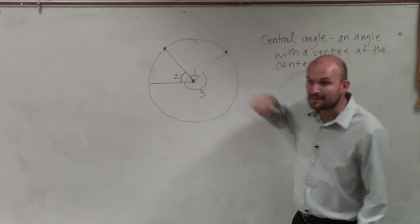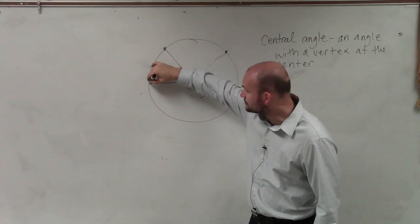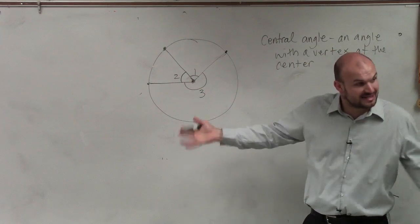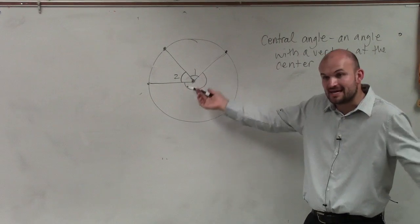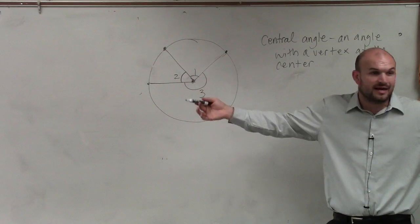Yes, I know that is obtuse. This is an obtuse angle. Angle 3 is obtuse. But is that okay? It has a vertex at the center. It's larger than 180 degrees, actually.